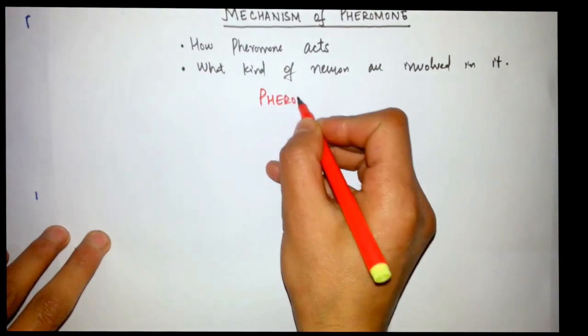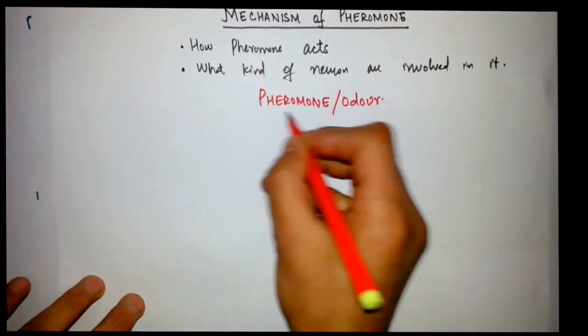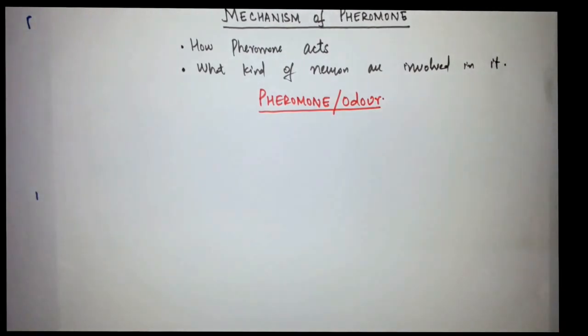So, pheromone here, or we can say odor - I have written odor here because in the case of mammals we say they are odors, or any substance which creates action potential in neurons.